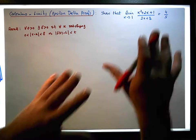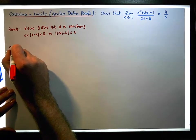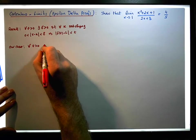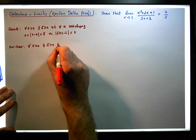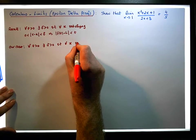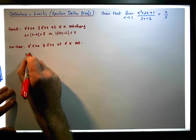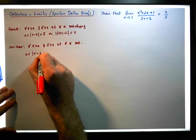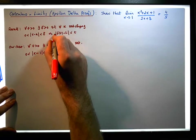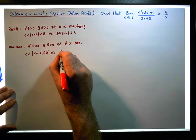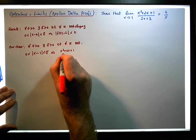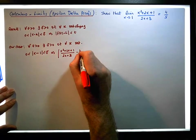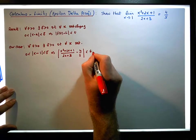In our case, we need to show that for each and every epsilon greater than 0, there exists a delta greater than 0, such that for each and every x satisfying 0 less than the absolute value of x minus 1 — that's where the limit is tending to — is less than delta. This implies that the absolute value of x squared plus 2x plus 1 over 2x plus 3, minus 4 over 5, is less than epsilon.